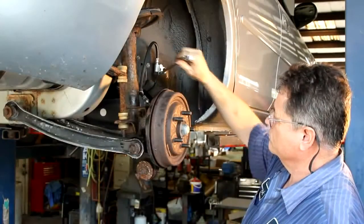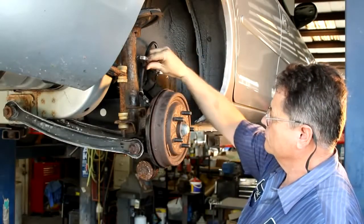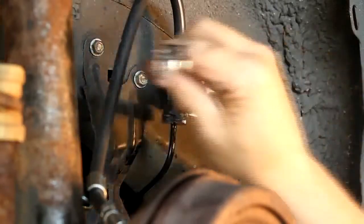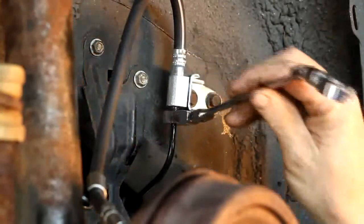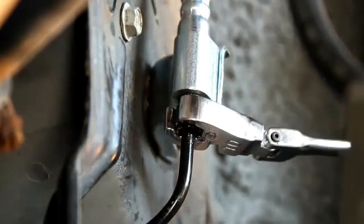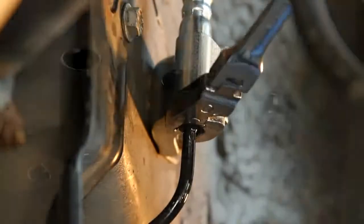Let's take a look at an actual application showing how the GearWrench ratcheting flare nut wrench saves time. Here we see a technician loosening a brake line. Notice how quickly this feature allows him to complete the job.